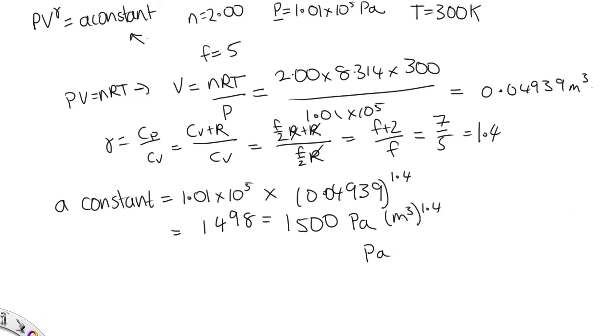So the units are Pa. 3 times 1.4 gives us 4.2. So it's meters to the power of 4.2. So those would be our very strange units.